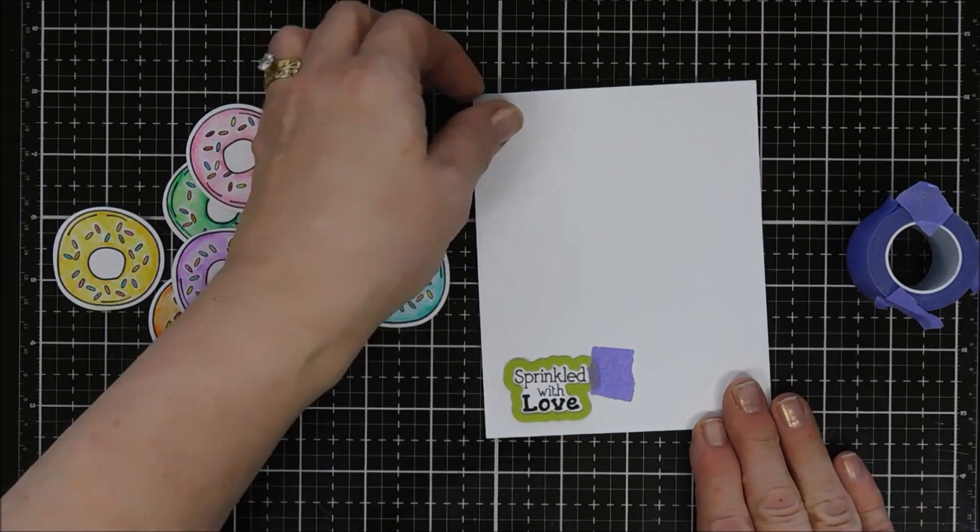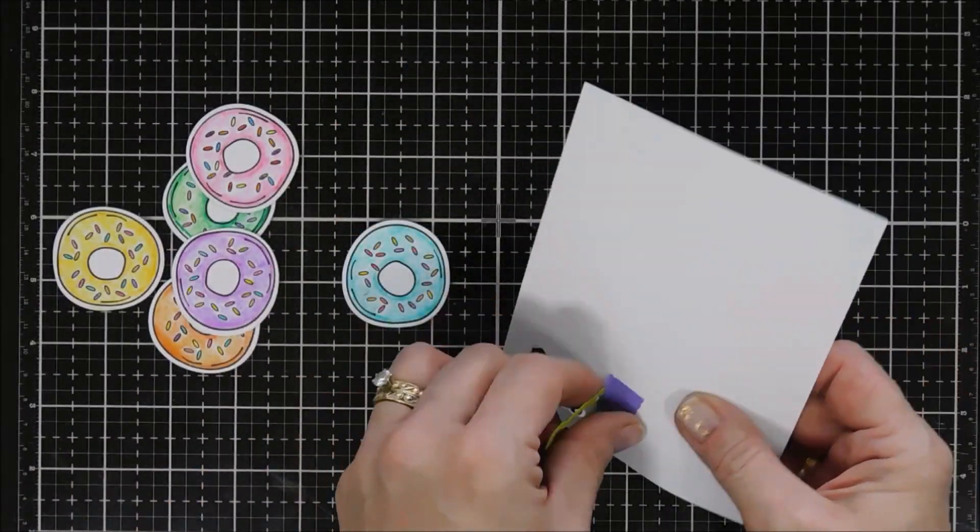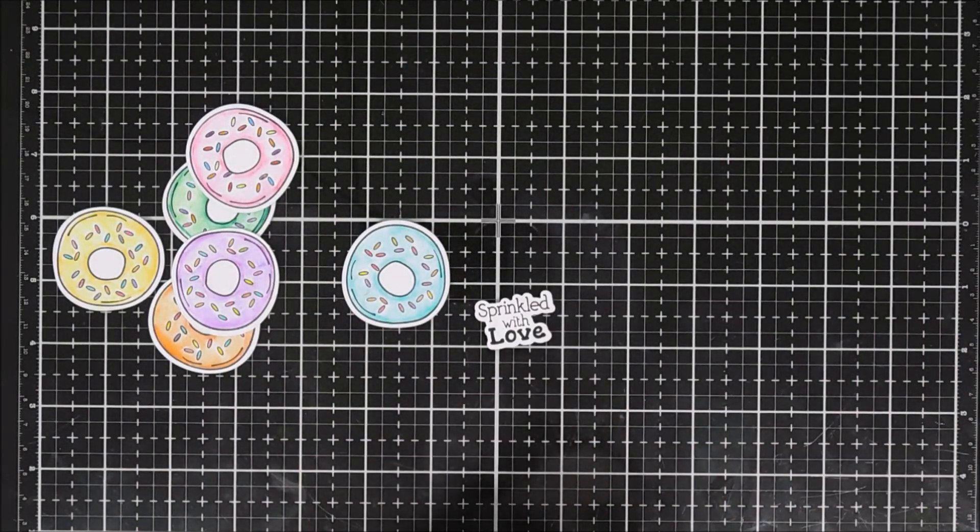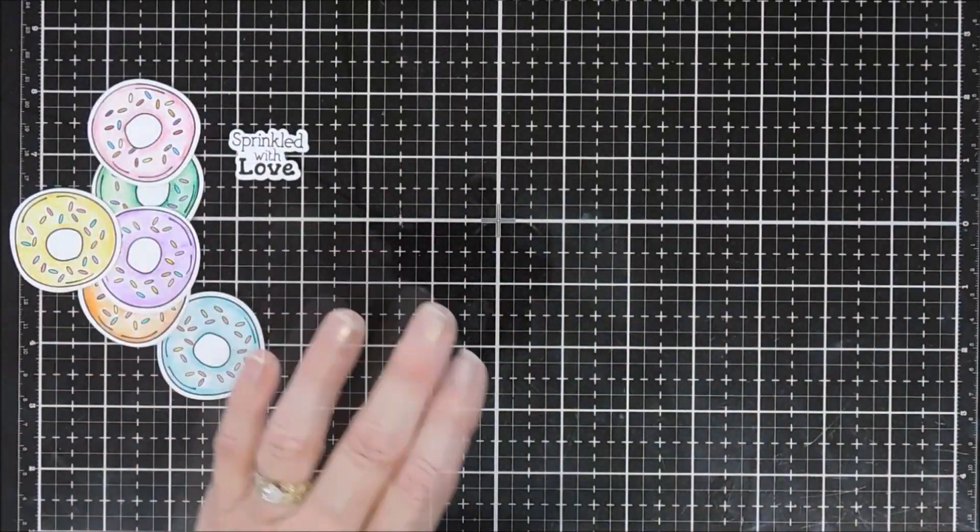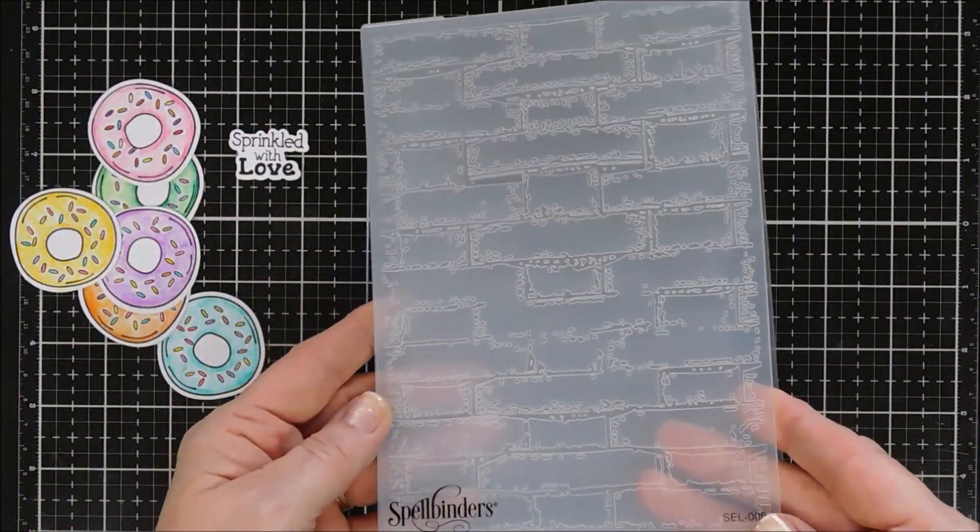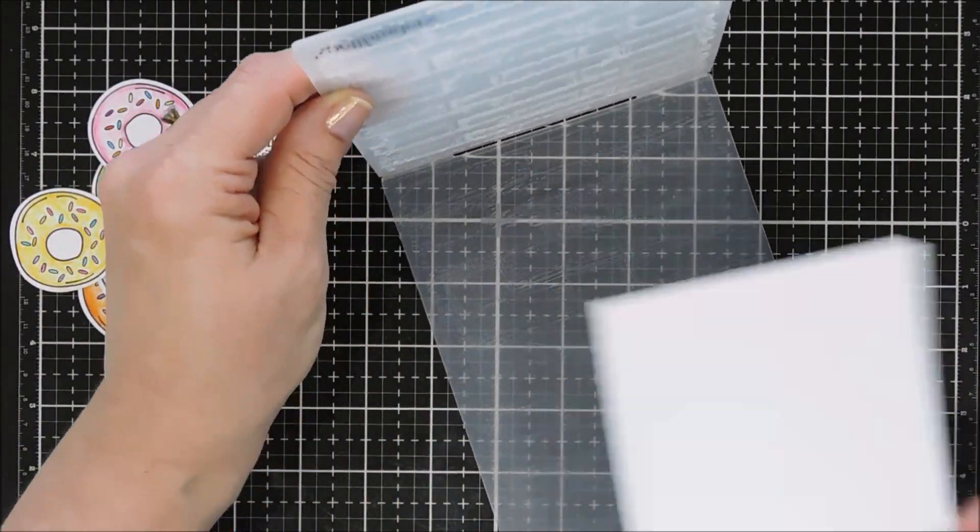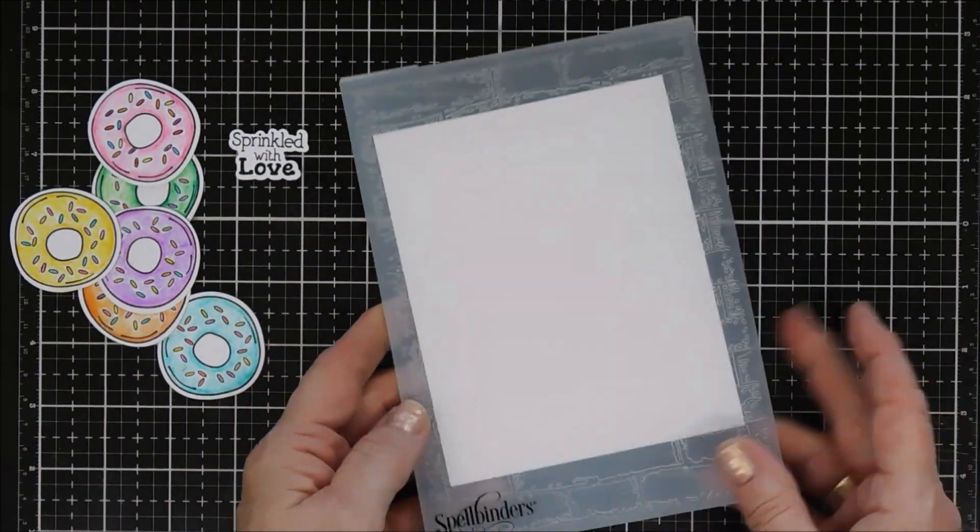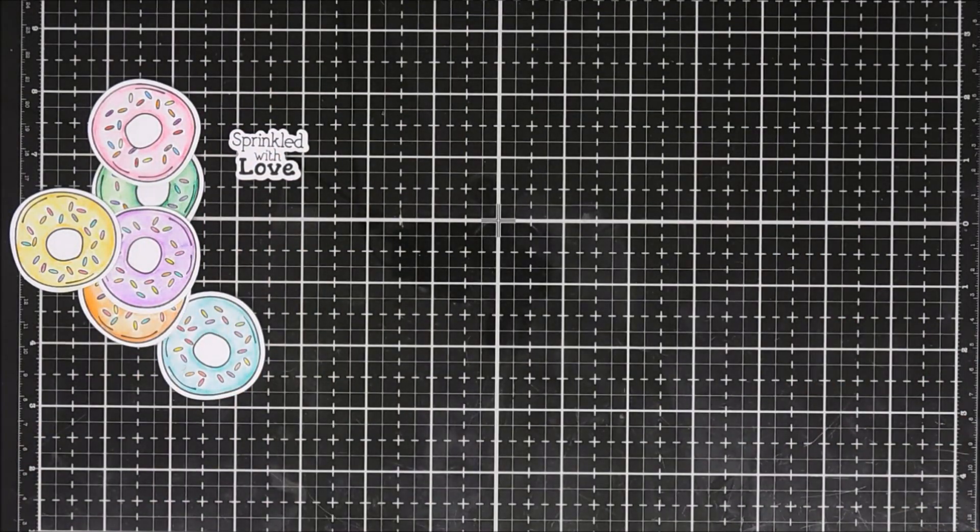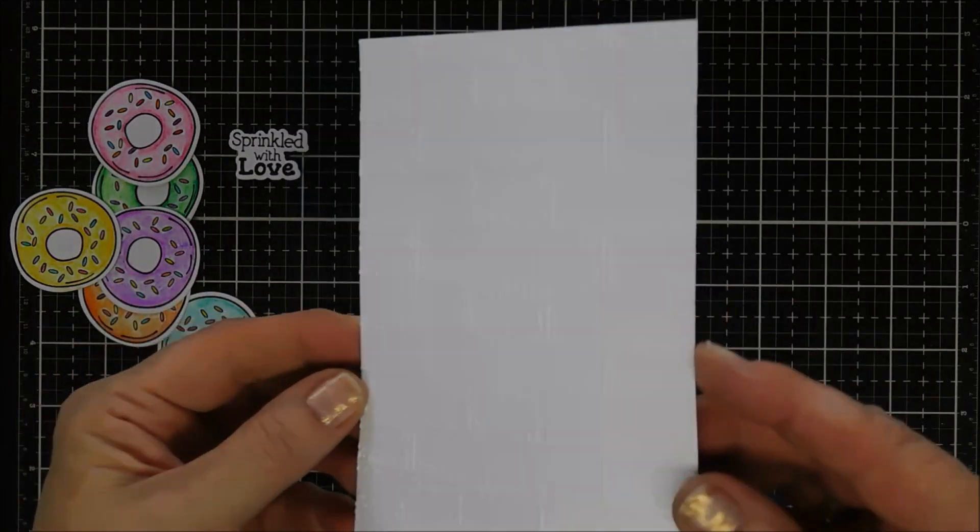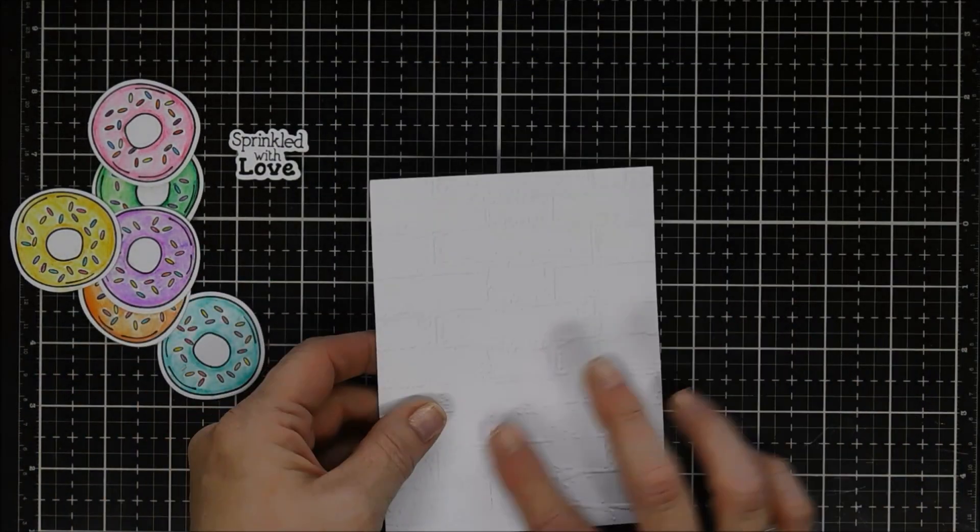We'll just tape that down and run that through our die-cut machine. There's our sentiment, all ready to go. Now for my background, I'm going to bring in an embossing folder. This one here is called Picnic and it's from Spellbinders. You know what, when I went to do my linking, this is on clearance right now for $1.90. It's a larger embossing folder and I'll list it down below in case you want to check it out.